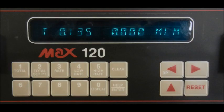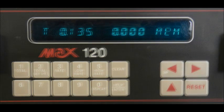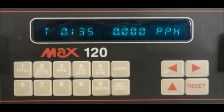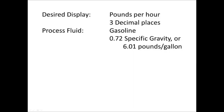In this video, we will reprogram a display that was showing milliliters per minute and total milliliters to now show pounds per hour and total pounds. To make this change, we need to know the meter's k-factor. Let's say it's 1000 pulses per cc, like in our last example.